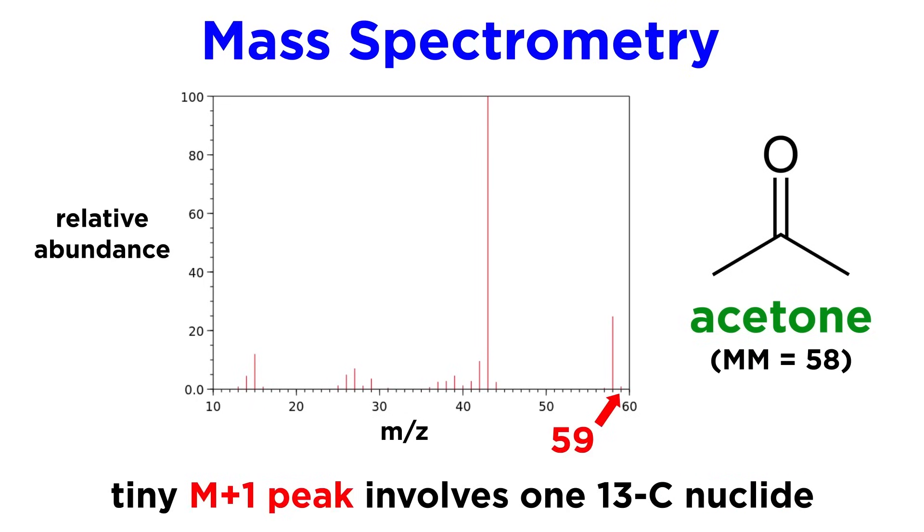We will also find what is called the M plus 1 peak at 59. This is due to the relative abundance of carbon-13. Since around 1% of all carbon atoms are carbon-13, then some small proportion of acetone molecules will have a carbon-13 nuclide somewhere in the molecule, giving it a mass of 59.